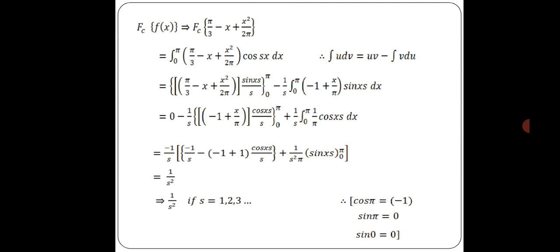First term evaluates to 0. Then: -1/s · [(-1 + x/π) · cos(sx)/s] from 0 to π, plus (1/s) integral from 0 to π of (1/π) cos(sx) dx. That gives a common value: -1/s² [(-1 + 1) cos(sπ) - (-1)(1)] + (1/s²π) · sin(sx) from 0 to π. Using cos(sπ) = (-1)ˢ, sin(π) = 0, sin(0) = 0, the final answer is 1/s², for s = 1, 2, 3, etc.